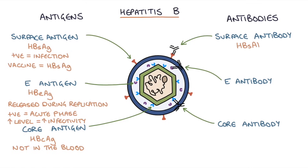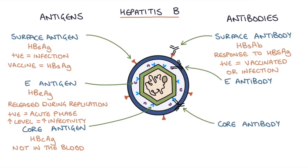The hep B surface antibody demonstrates an immune response to the hep B surface antigen. Remember that the hep B surface antigen is given as part of the vaccine, so a hep B surface antibody may simply indicate that the person has been vaccinated and created an immune response to the vaccine. The hep B surface antibody may also be present in response to an infection, so you need to use the other viral markers to distinguish between previous vaccine and infection.